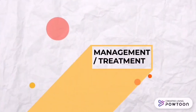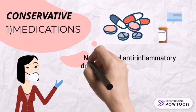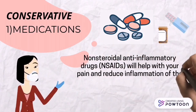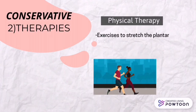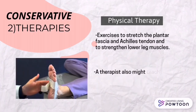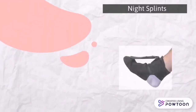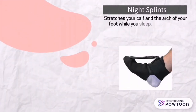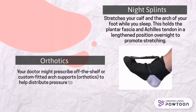For management and treatment of plantar fasciitis, conservative management includes medications — non-steroidal anti-inflammatory drugs will help with pain and reduce inflammation. In therapy, physical therapists can show you exercises to stretch the plantar fascia and Achilles tendon and strengthen lower leg muscles. A therapist may also teach you to apply athletic taping to support the bottom of your foot. Night splints stretch your calf and the arch of your foot while you sleep, holding the plantar fascia and Achilles tendon in a lengthened position overnight. Your doctor may also prescribe off-the-shelf or custom-fitted arch supports to help distribute pressure to your feet more evenly.